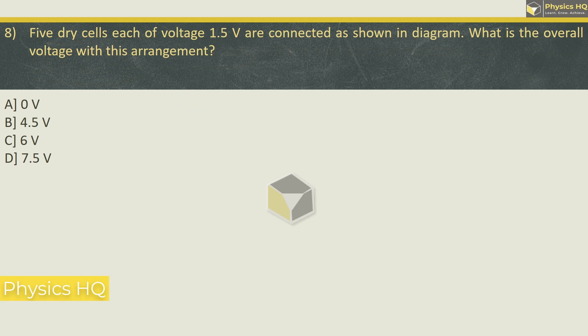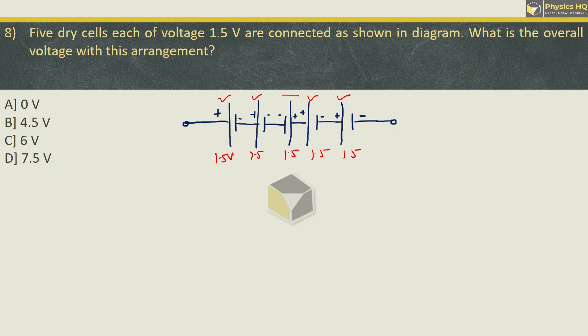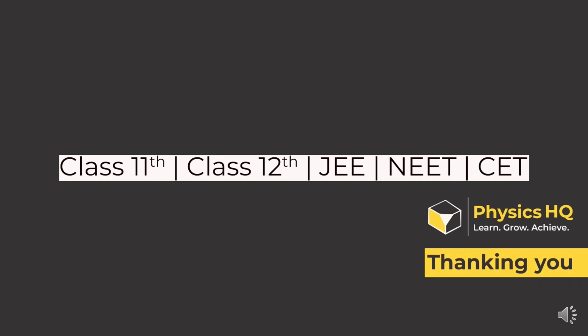Five dry cells each of voltage 1.5 volt are connected as shown in the diagram. What is the overall voltage with this arrangement? Each cell has value 1.5 volt. If you see, the first, second, fourth and fifth cells all have polarity left hand side positive, right hand side negative. But the middle cell has opposite polarity. You can think that its effect will cancel one cell of the same value. So we are left with 1.5 three times, which is 4.5 volt. The correct option is 4.5 volt.